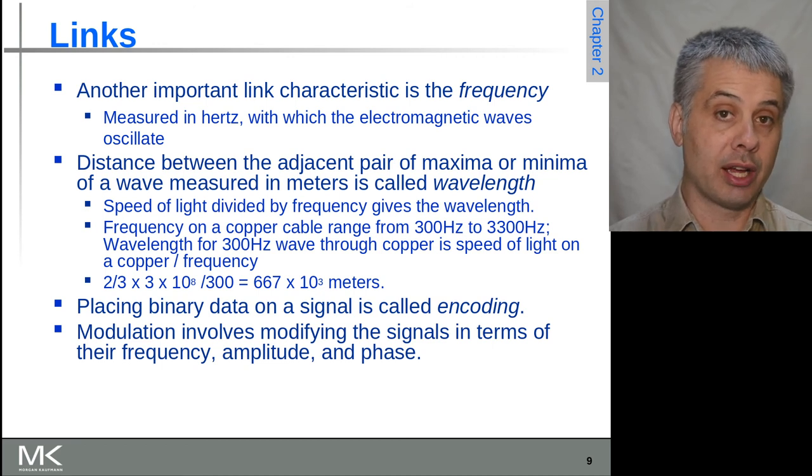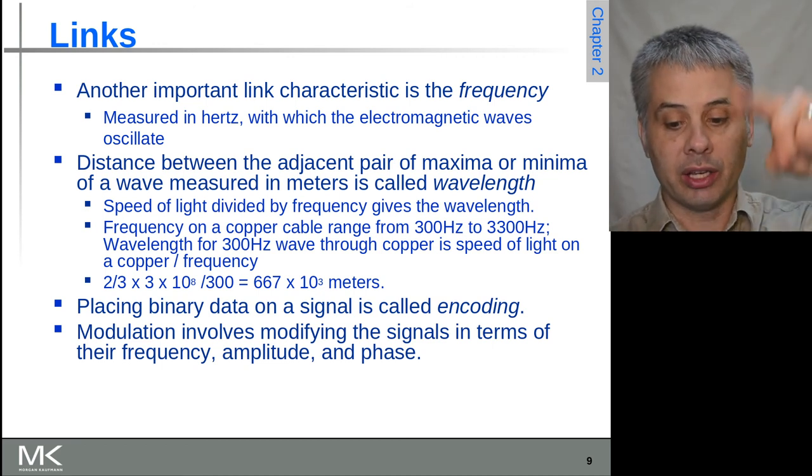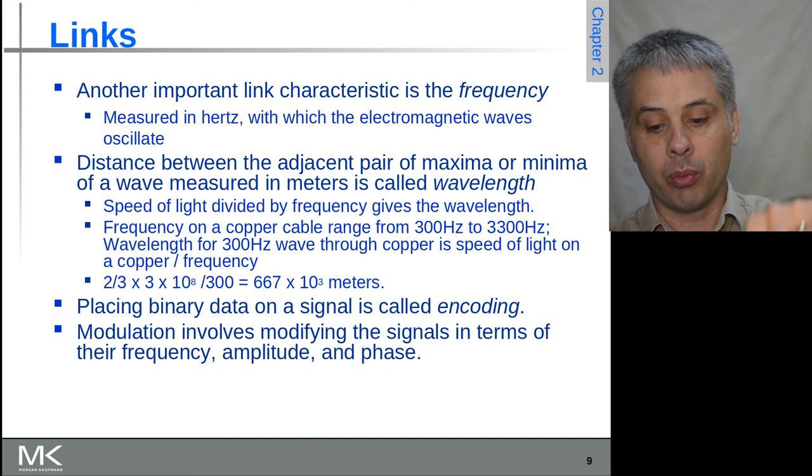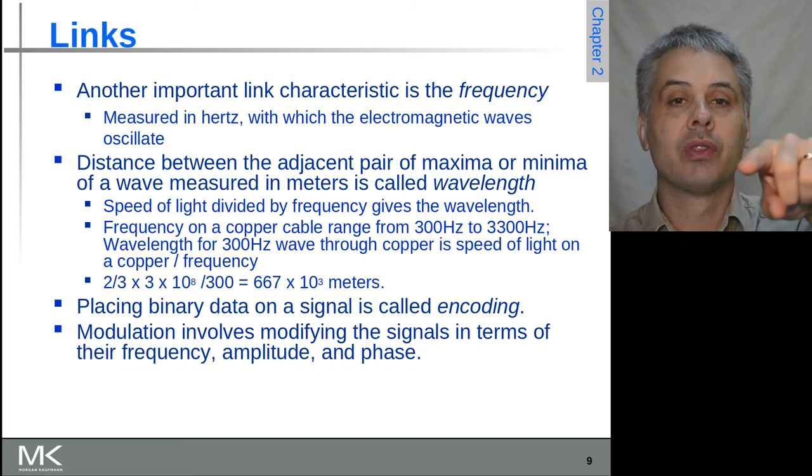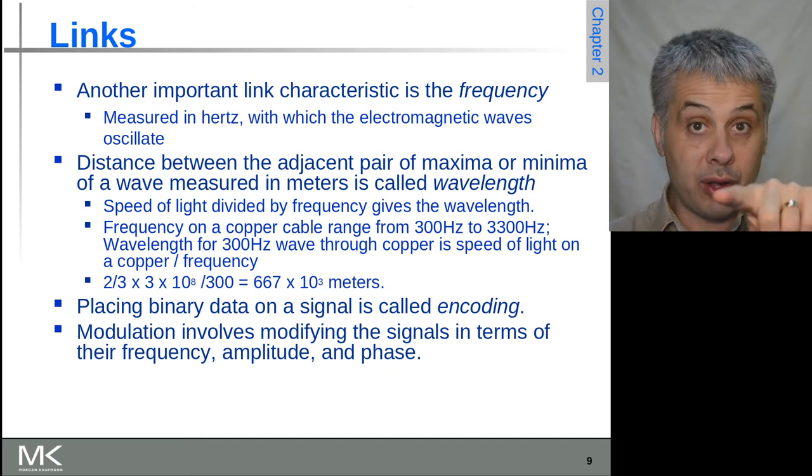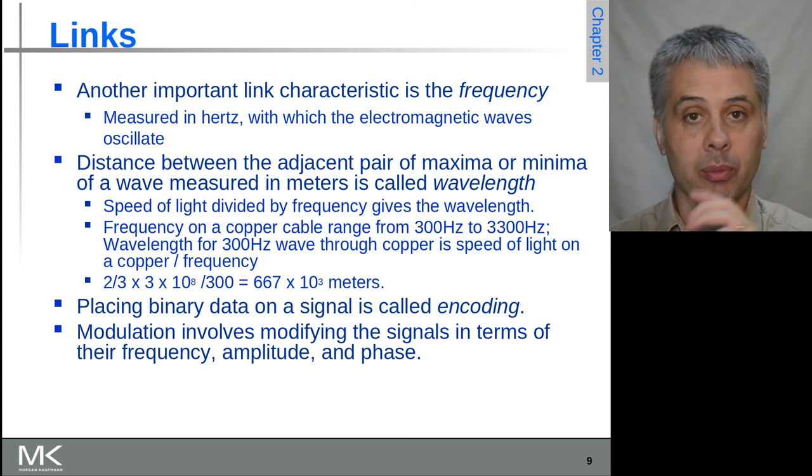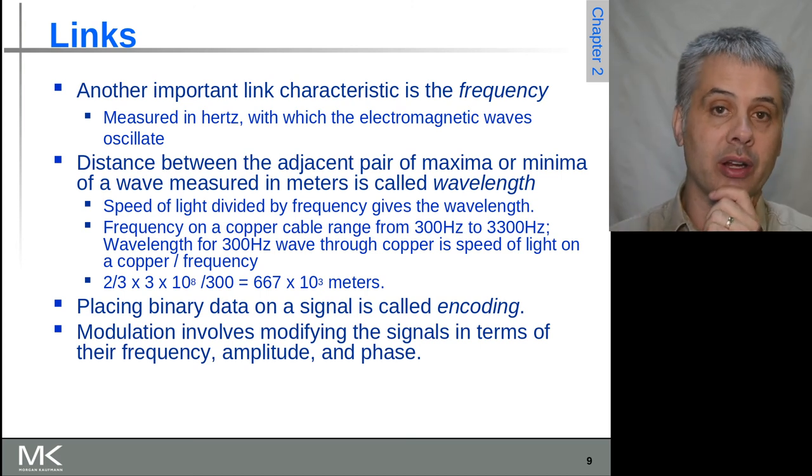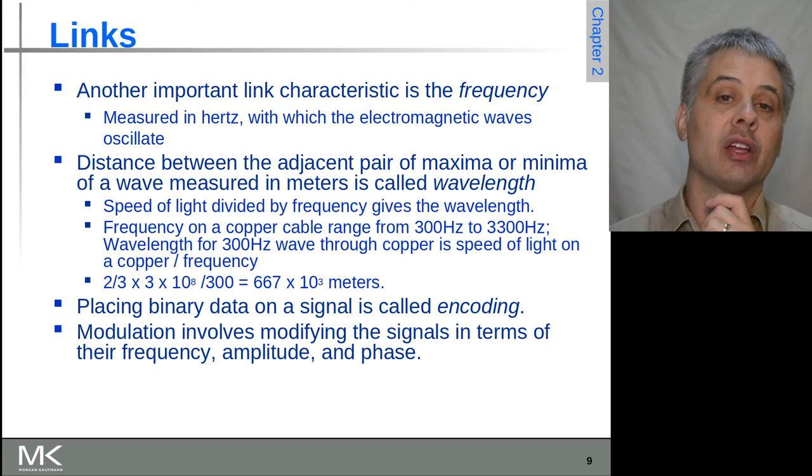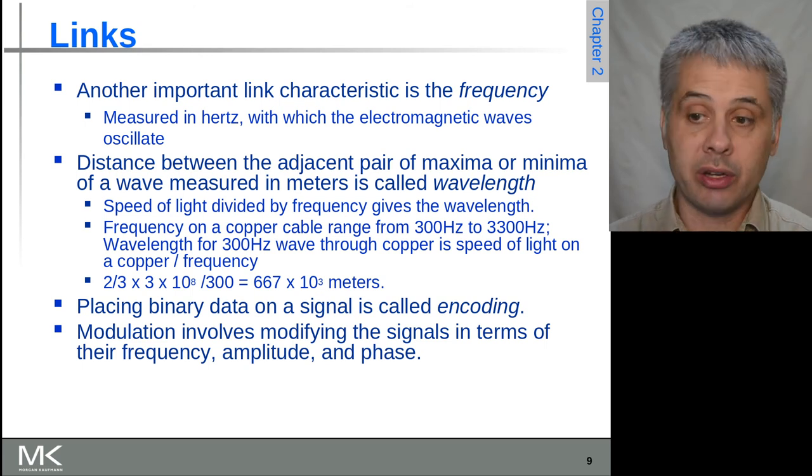We might, for example, modulate how tall those waves are (amplitude modulation)—when they're jiggling, a big jiggle might be a one and a little jiggle might be a zero. Or we might change the frequency, so we change how fast it's jiggling between a one and a zero with two nearby frequencies. Or we might change the phase of the wave, or do some combination of these. There's lots of different ways to modulate a signal.